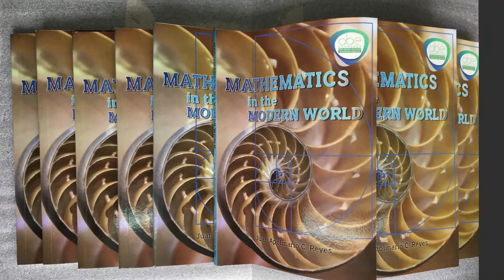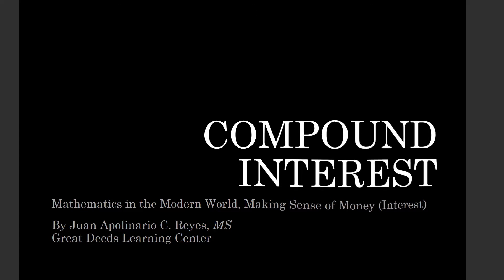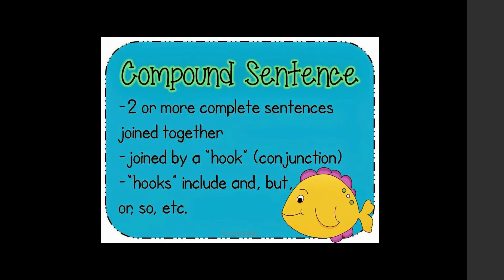Compound interest — this is not the first time you met the word compound. You met compound in science: a compound microscope uses many lenses and those lenses multiply the power of the eyepiece lens. In chemistry, a compound is a substance composed of two or more distinct atoms. In writing, a compound sentence has two or more complete sentences joined together by a conjunction.